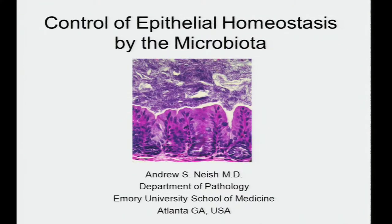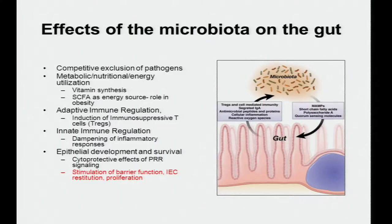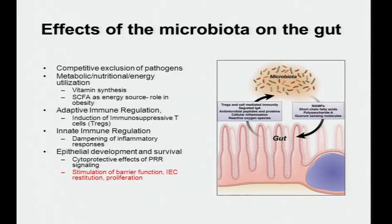It's essentially one class of bacteria, which is completely different from what we've been talking about. Nonetheless, I think some aspects of reductionistic science retain a lot of value in the analysis of the microbiota. Here's the obligatory slide: effects of the microbiota on the gut. Competitive exclusion of pathogens, metabolic and nutritional energy utilization, vitamin synthesis, short-chain fatty acids—all very well understood. There's also great interest in adaptive immune regulation and induction of T cells.